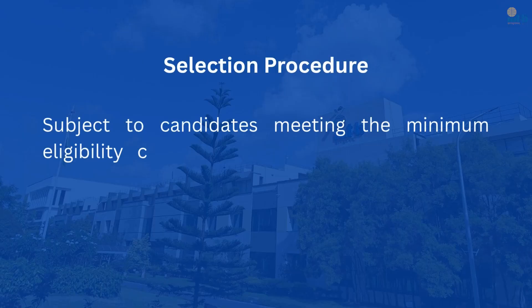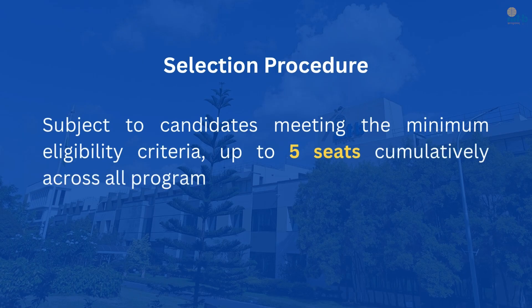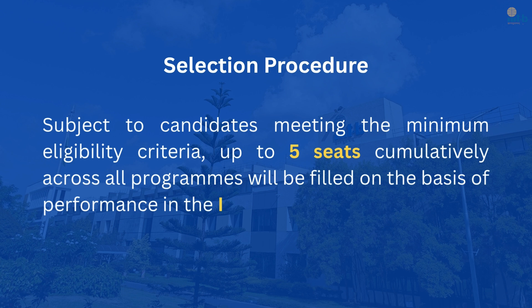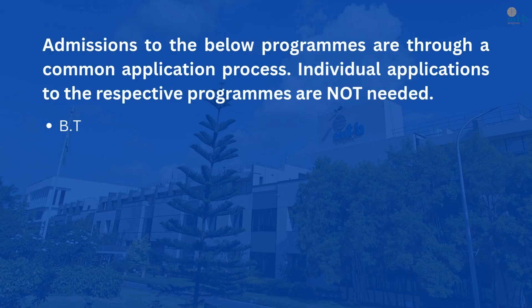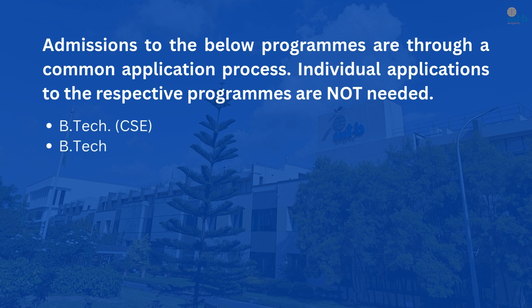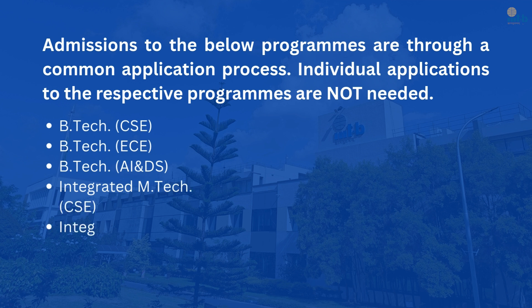Up to five seats across all programs are reserved for Olympiad qualifiers, provided that they meet the minimum criteria. Applicants will choose from five programs: B.Tech in Computer Science Engineering, Electronics and Communication Engineering, Artificial Intelligence and Data Science, and Integrated M.Tech in Computer Science Engineering and Electronics and Communication Engineering, through a single application indicating their preferences. Seat allocation will happen both online and on campus, and the preferences selected during the application will remain final.